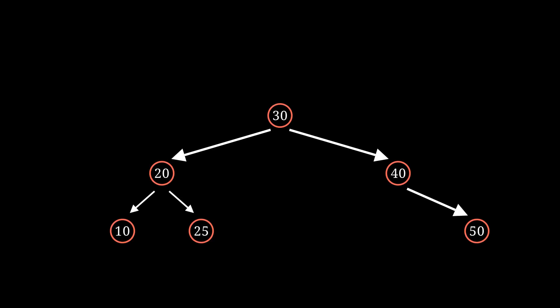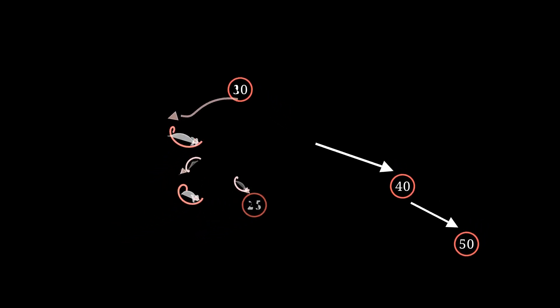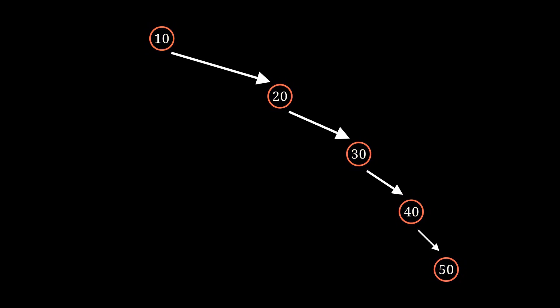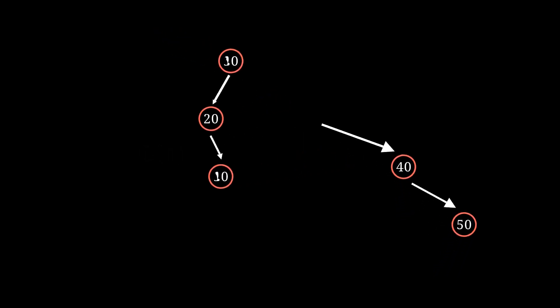A binary search tree is only fast when it is balanced. If the binary search tree is not balanced, it is possible for the tree to become a singly linked list to the right. When searching this, it can take up to O(n) time to find the node. We need a way to automatically balance the tree — this is where an AVL tree comes in.